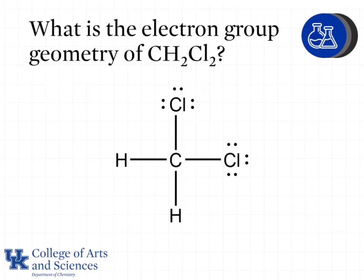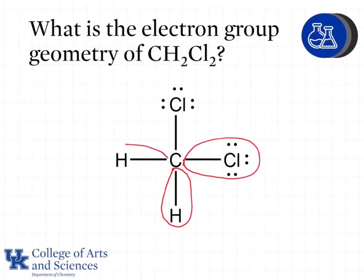What is the electron group geometry of CH2Cl2? Carbon is our central atom and has four groups around it, so it will be tetrahedral geometry.